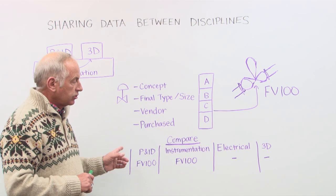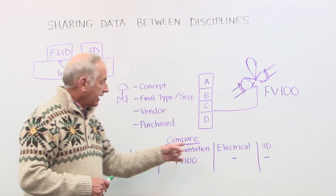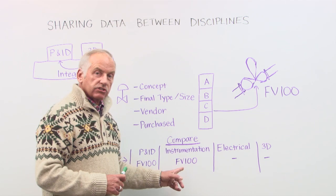Now, the compare is important too. Then you have the disciplines like the process guys, the P&ID, the instruments guys, the electrical guys if it's a motor-operated valve, and of course the 3D. You can compare the data in these disciplines.